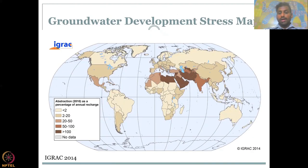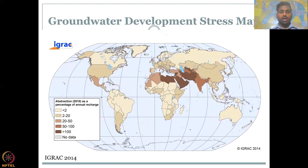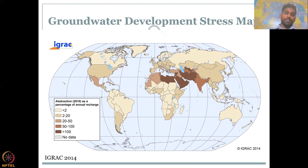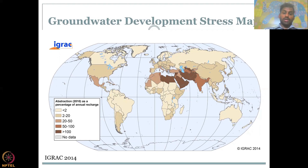Moving on to another study by IGRAC — an international organization for groundwater studies. The previous NASA study was in 2015, and this IGRAC study from 2014 shows a similar pattern. They took 2010 as the study year and developed a groundwater development stress index — showing where groundwater development and stress is happening the most. It is calculated using two values: abstraction and annual recharge, similar to a bank account showing how much money is coming in versus how much is being taken out.